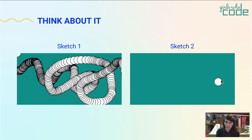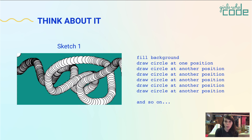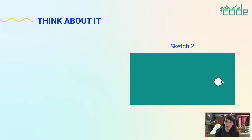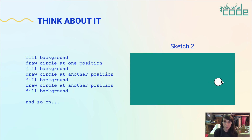Welcome back — let's check your solution. Sketch one has the background function in setup, which means the background is only drawn one time. Since the ellipse function is in draw, p5 draws a new circle at the mouse position every time the program loops, leaving a trail. You could describe it like this: build background once, then draw a circle at one position, draw a circle at another position, and so on until the mouse stops. Sketch two has the background function in draw, meaning the program draws the background and the circle every time it loops. This gives the appearance that the circle moves smoothly through space as we move the cursor, even though the program is drawing new circles just like in the first sketch — fill background, draw a new circle, fill background, draw a new circle, and so on. That wraps it up for program flow and this video, and we hope to see you back for part two.